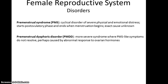Disorders include premenstrual syndrome, a cyclical disorder usually associated with severe physical and emotional distress. It starts at the post-ovulatory phase and ends when menstruation begins. While its exact cause is unknown, it can be pretty severe in some women. Then there's premenstrual dysphoric disorder, which has more severe symptoms than PMS and does not resolve — meaning as long as ovarian hormones are being produced, the woman is essentially experiencing PMS-like symptoms all the time.